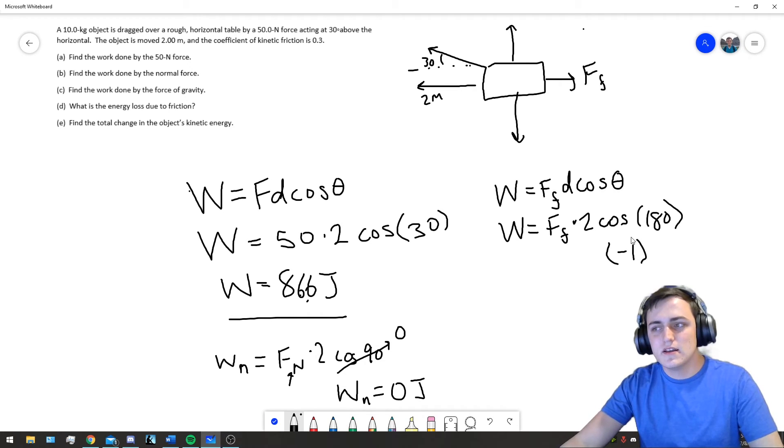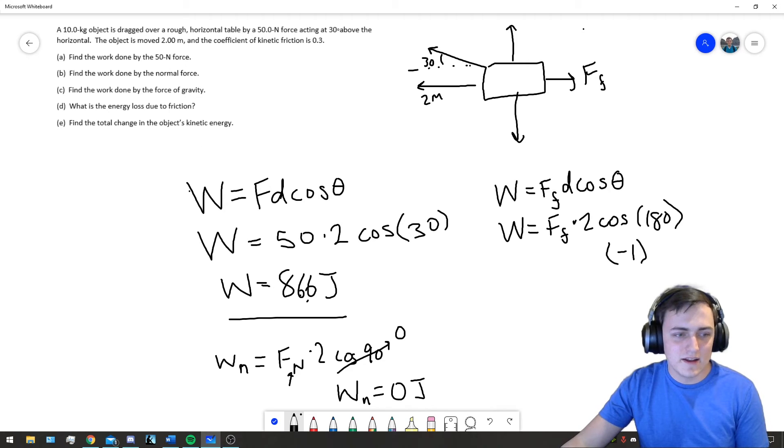Which is what we expect, because this is sort of a loss. It's an energy loss. This friction just takes away work. It just causes work to be lost in the form of heat. And, so we kind of expect it to be negative. And, that's sort of why this cosine 180 goes negative, and we expect a negative result. Don't be scared by that. And, part E,